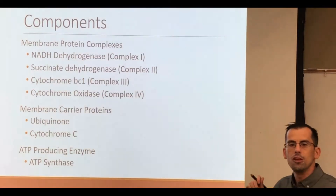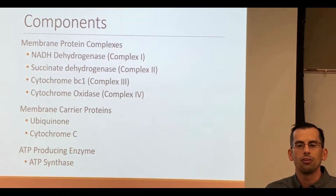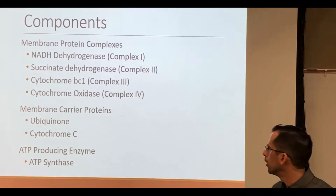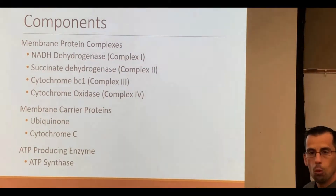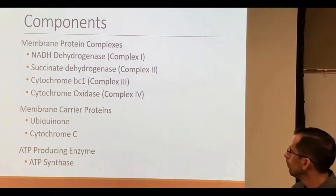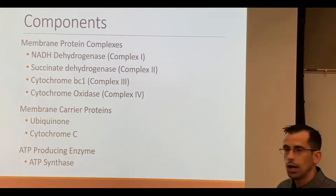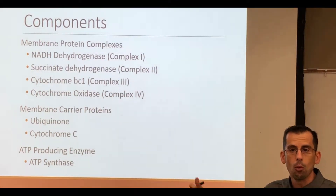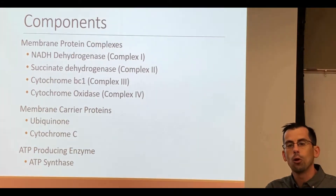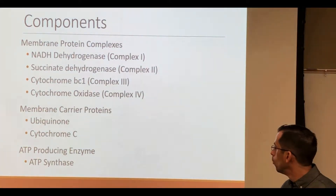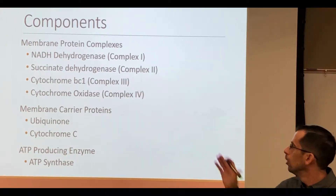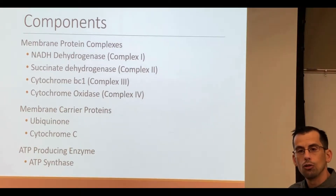The components of the oxidative phosphorylation process are as follows. We have a series of proteins bound into the inner mitochondrial membrane: NADH dehydrogenase, or complex 1; succinate dehydrogenase, or complex 2; cytochrome BC1, complex 3; and cytochrome oxidase, complex 4. Many students choose to remember the complex numbers rather than the more complicated names. In between these membrane-bound proteins, we have ubiquinone and cytochrome C, which act as shuttle proteins carrying electrons between the membrane-bound complexes.